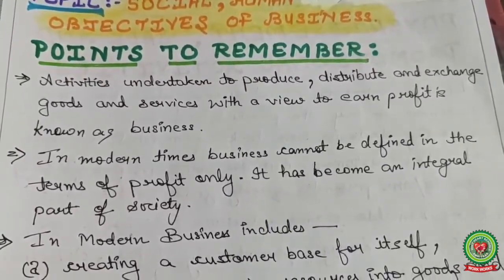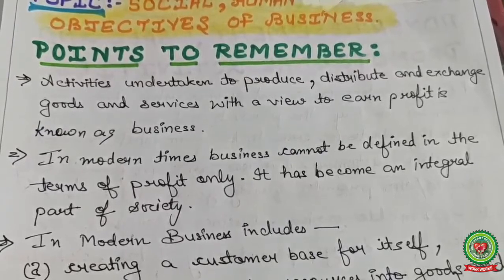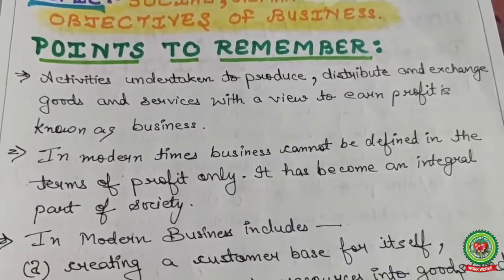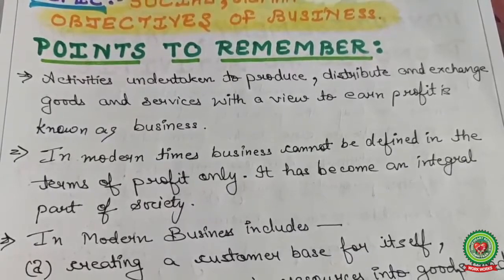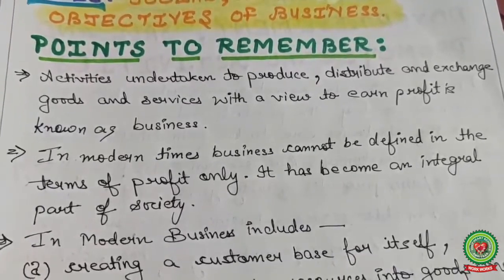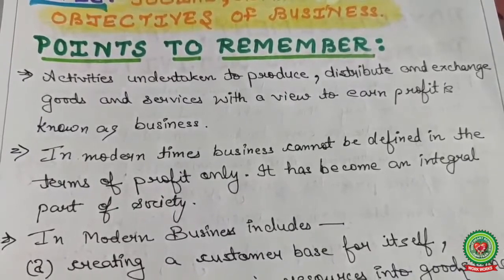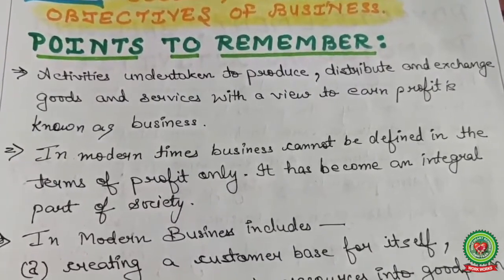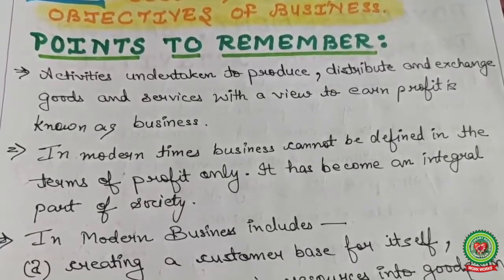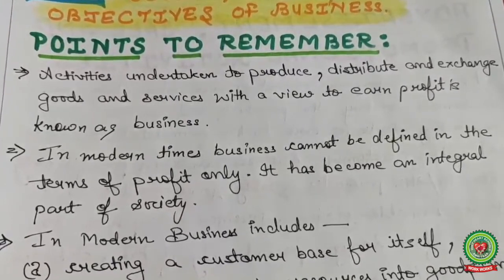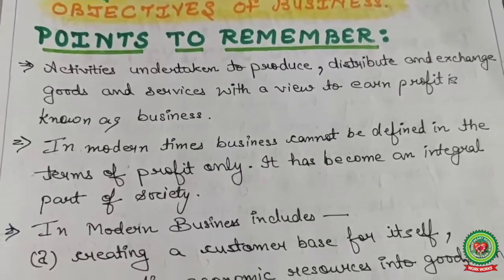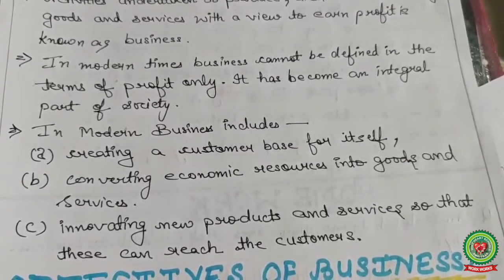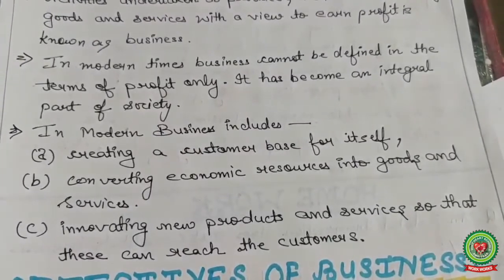In modern times, business cannot be defined only in terms of profit. In previous times, business may have focused solely on profits, but nowadays it has become an integral part of society. Since business is now an integral part of society, the businessman must first satisfy the needs and wants of the consumer before expecting profit. The third point is that modern business includes creating a customer base for itself.